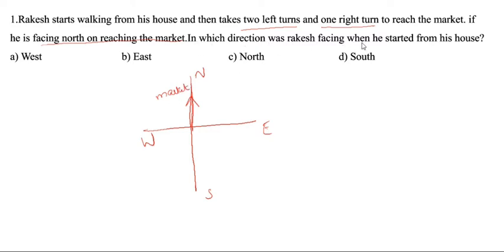In which direction was Rocky facing when he started from his house? Market is here. We have to find the house direction. Two left turns and one right turn — we have to work from the last step. One right turn to reach the market. In this question, you have to take it as a reverse turn, so you take a left turn instead. Left turn means here is the right side, here is the left side, so we go left.